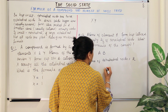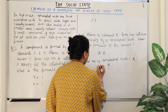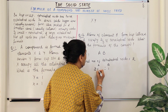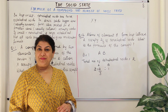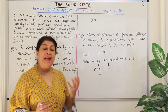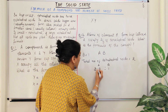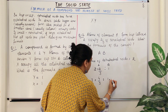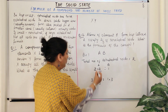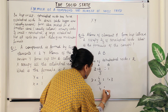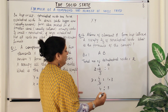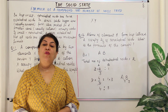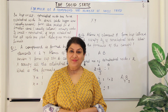B is 1, and A should equal 2 × (2/3) = 4/3. So the ratio of A to B is 4/3 : 1. Multiplying both sides by 3 to get whole numbers gives A = 4 and B = 3. The formula of the compound is A₄B₃.